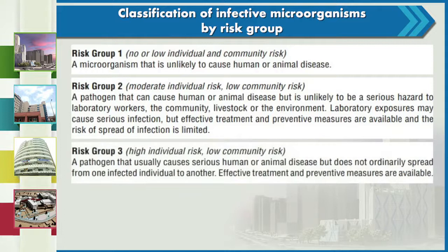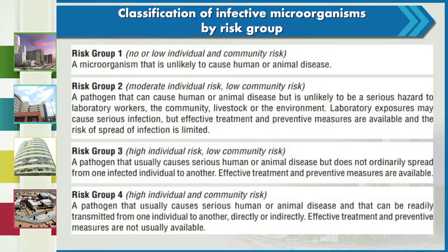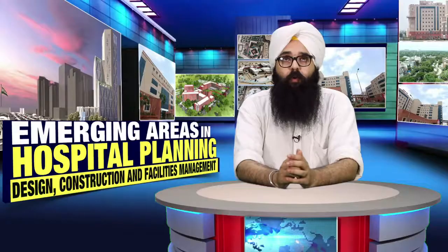In risk group 3 there is high individual risk but low community risk. The pathogen usually causes serious human or animal disease but does not ordinarily spread from one infected individual to another, and effective treatment and preventive measures are available. Risk group 4 carries high individual and high community risk — the pathogen causes serious disease and can be readily transmitted directly or indirectly, and effective treatment and preventive measures are usually not available.